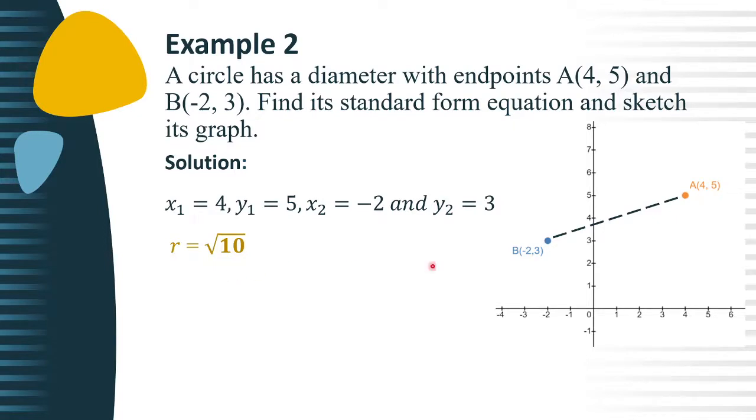Now, the midpoint of the line segment from A to B is the center of the circle. If the center of the circle is at (h, k), then by using the midpoint formula, we can find the value of h and k.